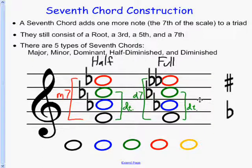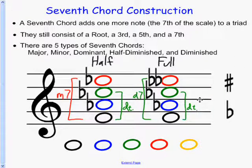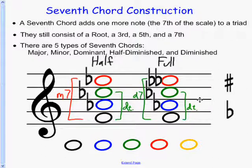So these are seventh chords. The major has a major seventh and a major triad. The dominant has a minor seventh but a major triad. The minor has a minor triad and a minor seventh. The half diminished has the minor seventh and the diminished triad. And the fully diminished seventh chord has a diminished seventh and a diminished triad.